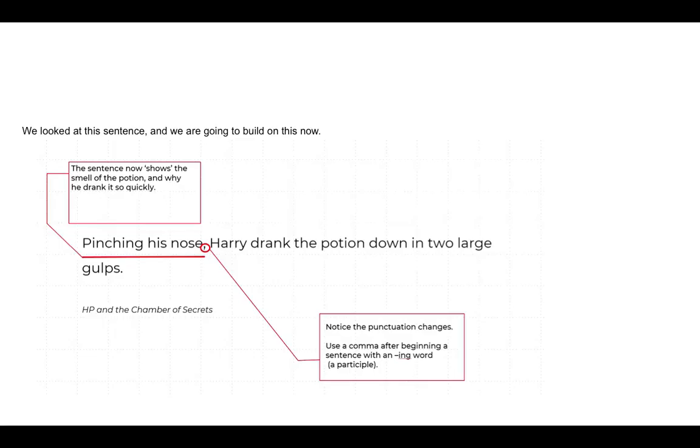Okay, welcome everyone to this second part. So we looked at this sentence here in Harry Potter: pinching his nose, Harry drank the potion down in two large gulps. And we saw how using an -ing phrase at the beginning of a sentence can extend the detail in the sentence. Now, I got you to write some of your own and you pasted them into that Google document, which was fantastic, and I'll be looking at those now.